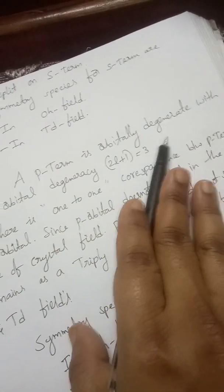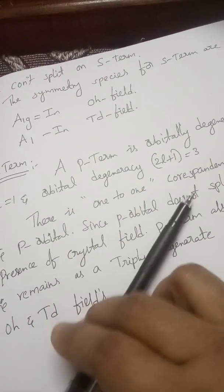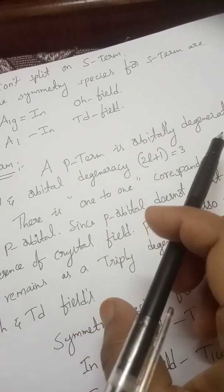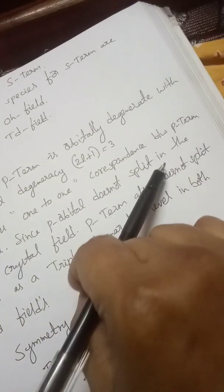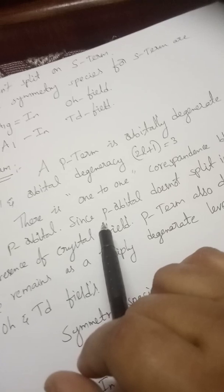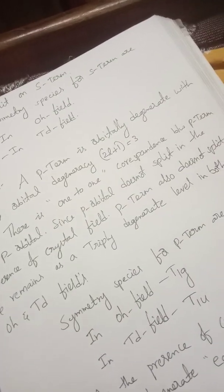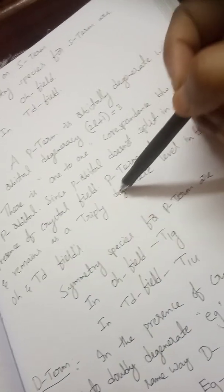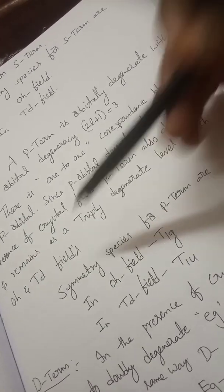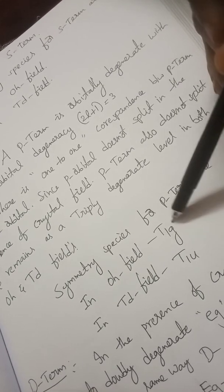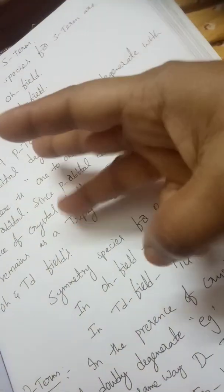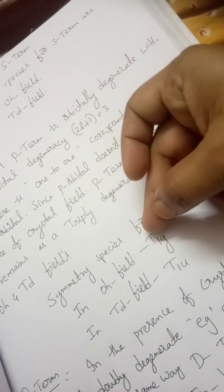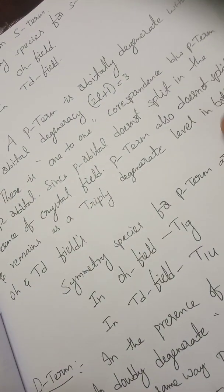For the P term: the P term is orbitally degenerate with L equal to 1. The small L value of the P orbital is 1, so 2(1)+1 = 3, giving 3 orbitals: Px, Py, and Pz. There is a one-to-one correspondence between the P terms and P orbitals. The P term does not split in the presence of a crystal field, and also does not split in the typical degenerate levels in both octahedral and tetrahedral fields. In octahedral we write T1g, and in tetrahedral T1u, where 'g' is gerade and 'u' is ungerade.